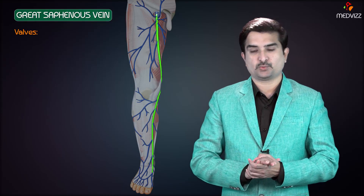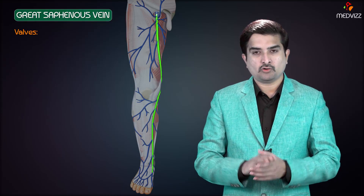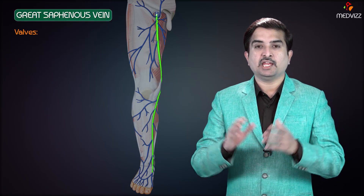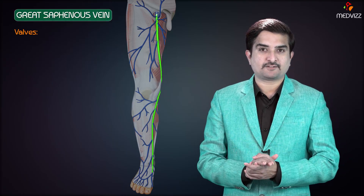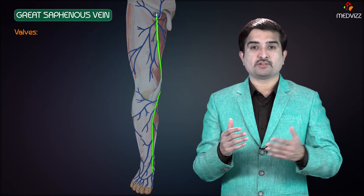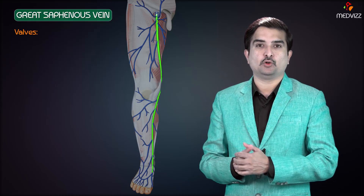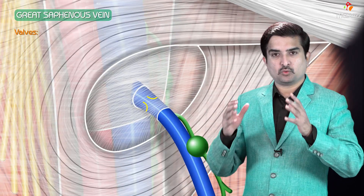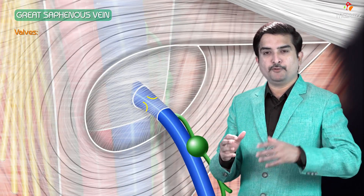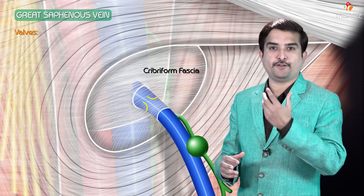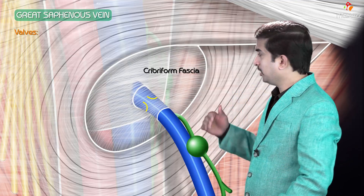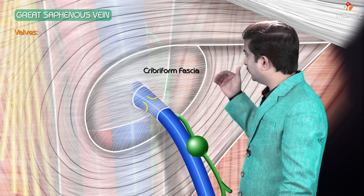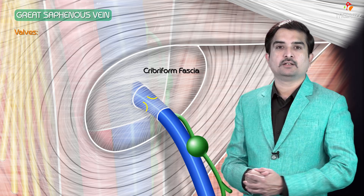Next are the valves in the great saphenous vein. There are approximately 10 to 20 valves located in the great saphenous vein, of which we will discuss only the important valves responsible for preventing backward flow of blood. One of these lies just before the vein pierces the cribriform fascia, that is just before the termination of the vein into the femoral vein.